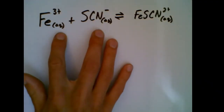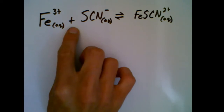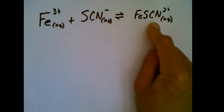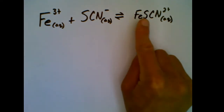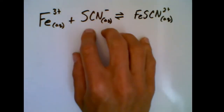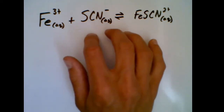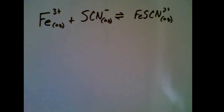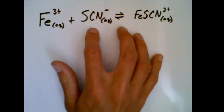Chemicals do the same thing, but they do it based on collision theory and rates. We're going to take a look at how this can actually take place by working through some examples. Here, iron 3+ is reacting with the thiocyanate ion to produce what's called a thiocyanato ion, or FeSCN²⁺. This is a system that we are going to say is at equilibrium, and we're going to walk through what happens when we have some kind of stress.